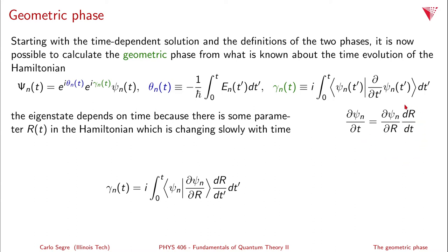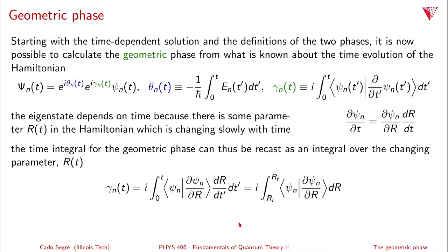Since r does not come into the inner product integral, we can pull it out, giving us γₙ(t) = i times the integral from zero to t of ⟨ψₙ(t') | ∂ψₙ/∂r⟩ (dr/dt') dt'. The dt' terms cancel, and we convert this to an integral over the slowly varying parameter r: i times the integral from rᵢ to r_f of ⟨ψₙ | ∂ψₙ/∂r⟩ dr.